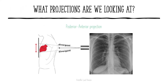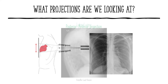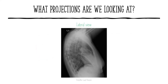We usually take two different projections for a chest x-ray examination. The first and main one is the posterior anterior projection, where we shoot x-rays through the back of the patient and measure it from the front. This is usually taken together with the lateral view x-ray. These two projections make up what the normal x-ray examination of the chest is.